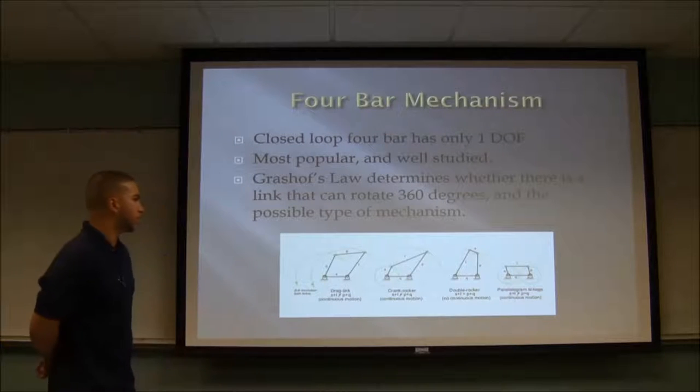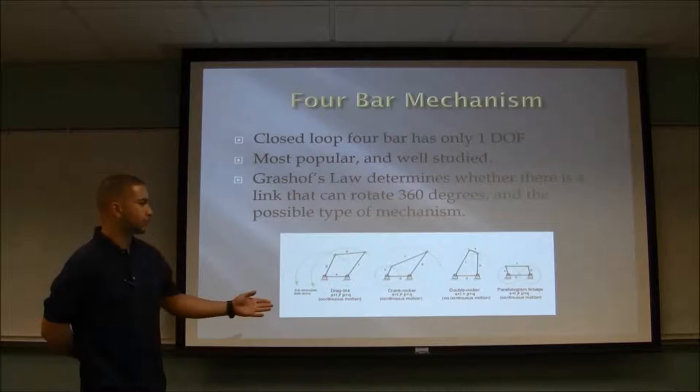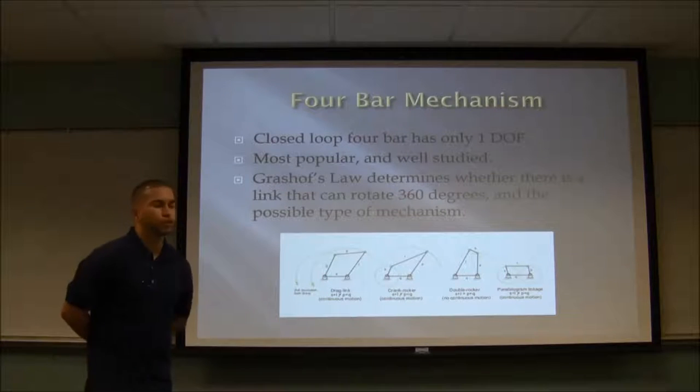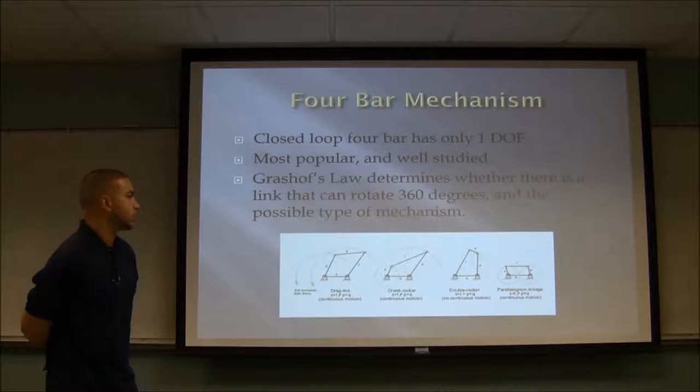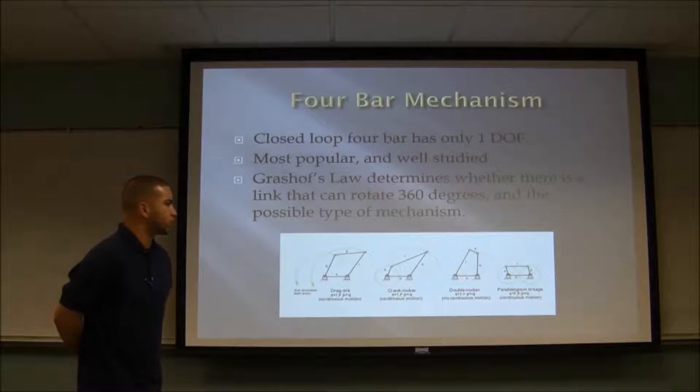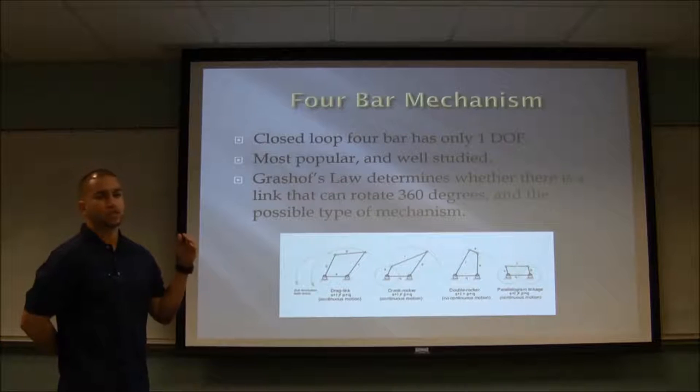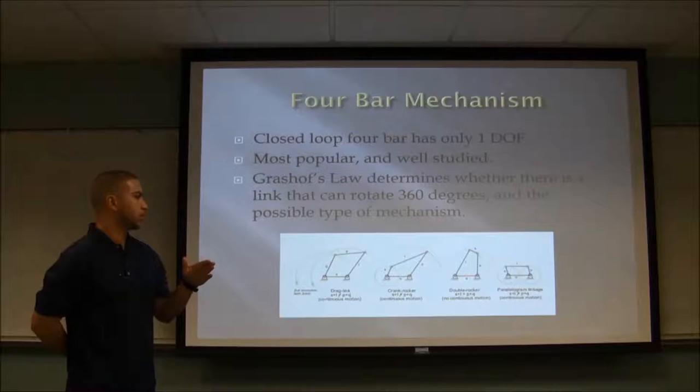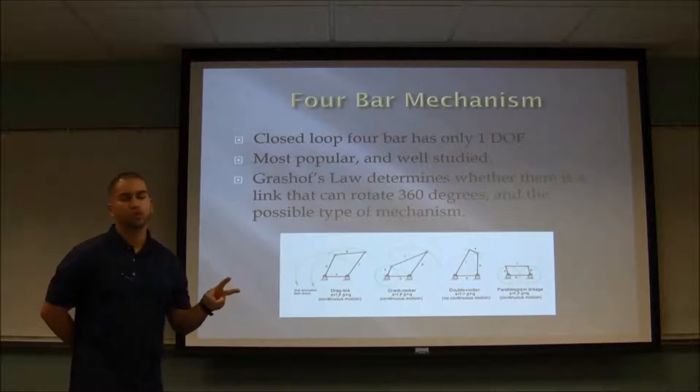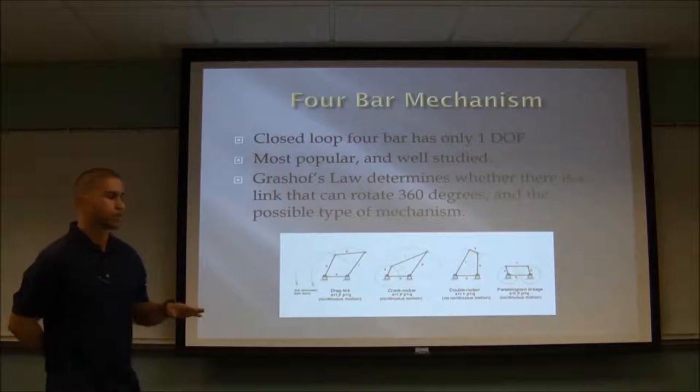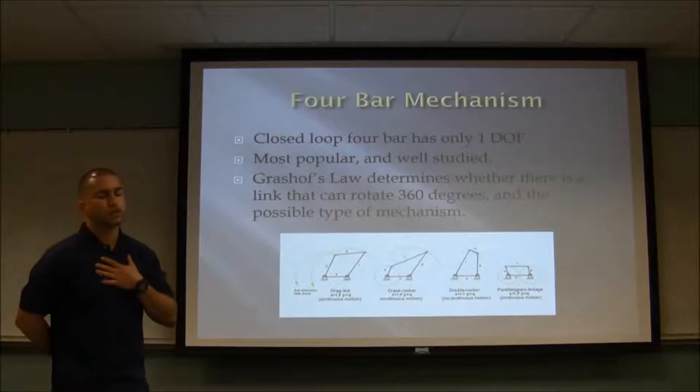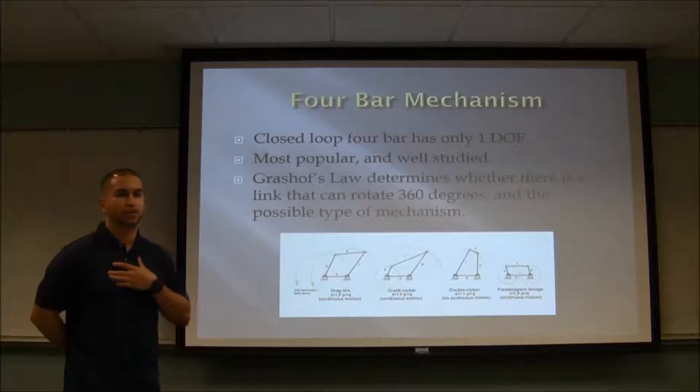As you can see in the diagram below, there's four different types of four bar mechanisms, including the crank rocker, which is ours. Also the double rocker, which has the shortest link on the top. The parallelogram linkage, which has two different lengths for links. And ours, a crank rocker, has the shortest link attached to the ground.